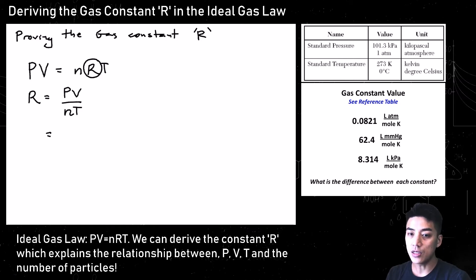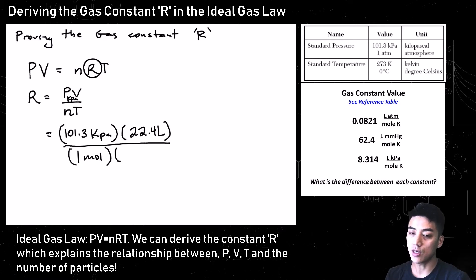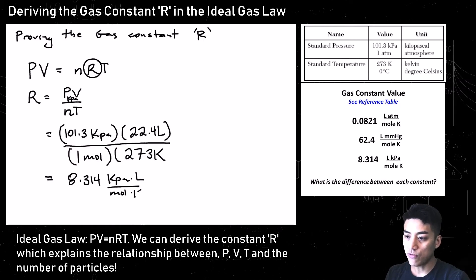Now we plug in values at STP. Standard pressure in kilopascals is 101.3 kPa at sea level. For volume, Avogadro's principle states 22.4 liters per 1 mole of any gas. N is 1 mole, which is 6.02 × 10²³. Temperature is 273 Kelvin. When you put this whole expression in a calculator, you get 8.314, with units of kilopascals times liters over mole times K. That's the gas constant value for kilopascals — use 8.314 whenever pressure is in kilopascals for the ideal gas law.